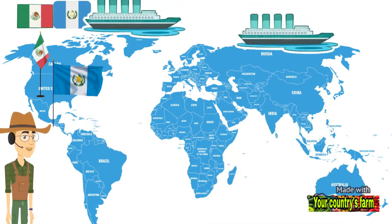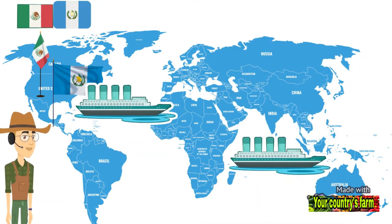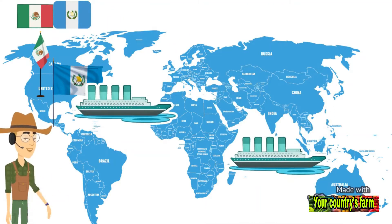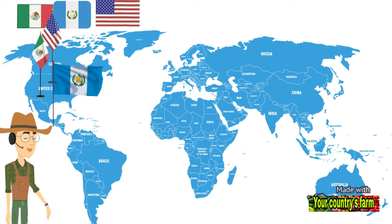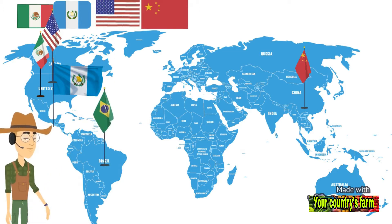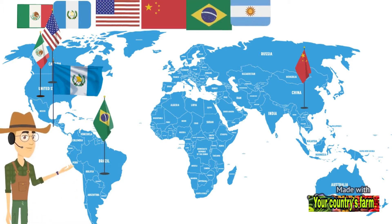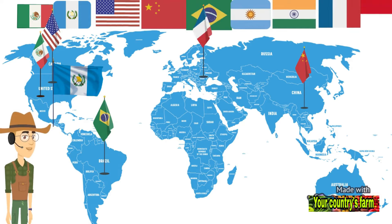Then European colonists spread it throughout the ancient world. Corn is the most important crop in the United States, and one of the most important producing countries, in addition to the United States, includes China, Brazil, Mexico, Argentina, India, France, and Indonesia.